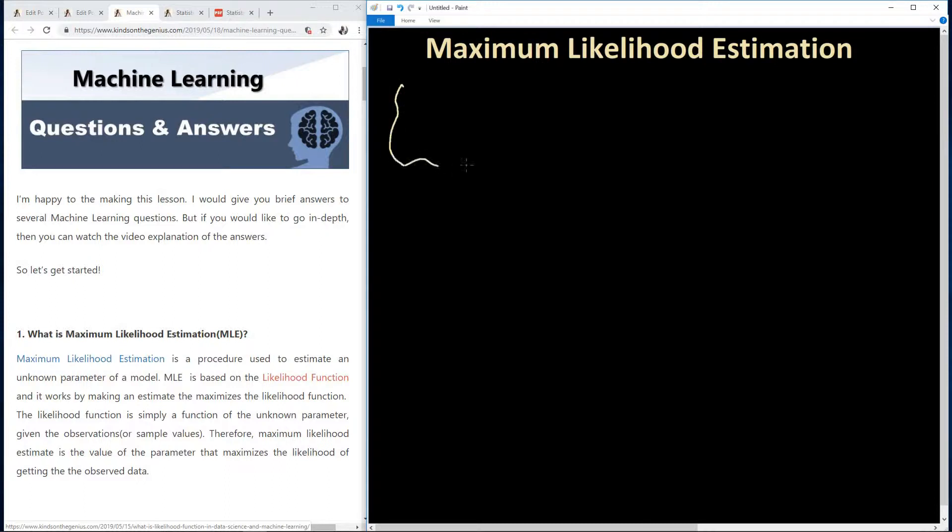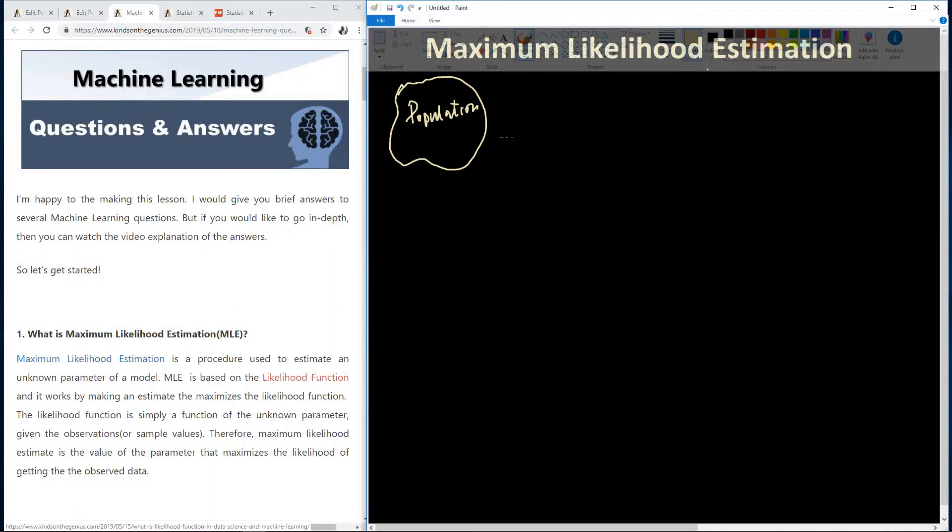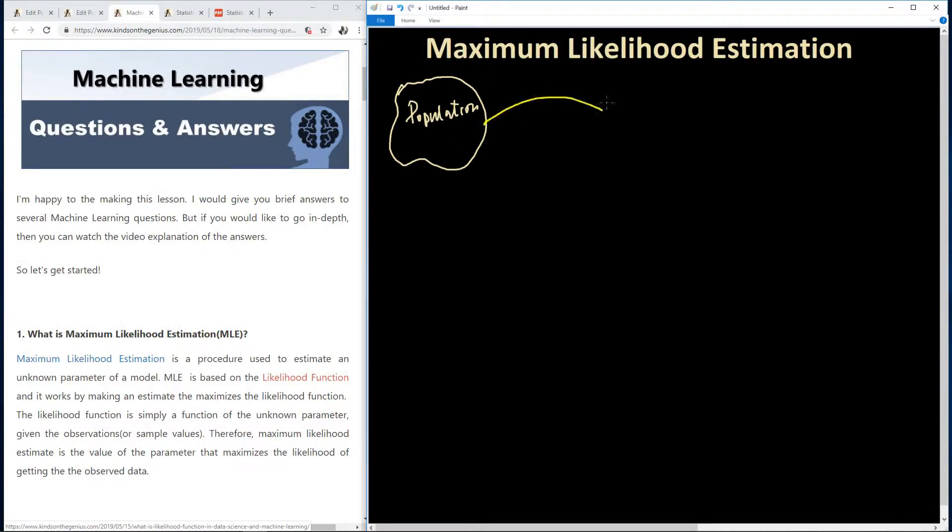And also remember that in estimation is simply that we have a population here, a population, and we want to make an estimate of some unknown parameter p. For us to estimate something from this population we simply take a sample from this population. We simply take out a sample. From this sample we can now make an estimate.